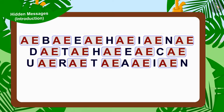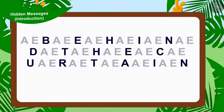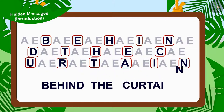If we only write the alphabets coming after A, E, excluding the alphabets A and E, we will find this written. Children, now did you understand the clue written in Appu's letter? Absolutely right. Here the clue is: Behind the curtain.